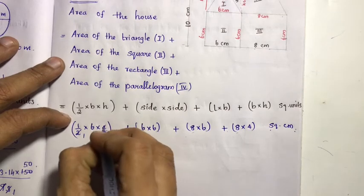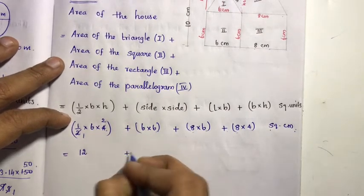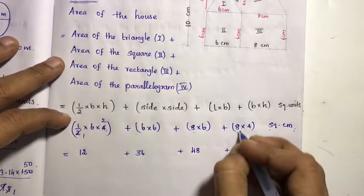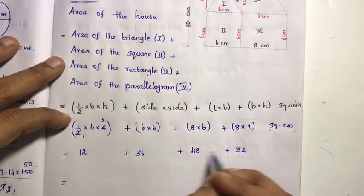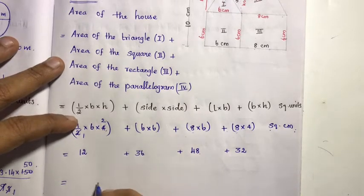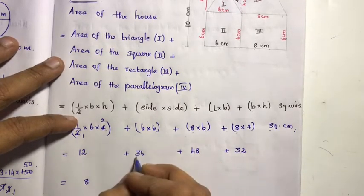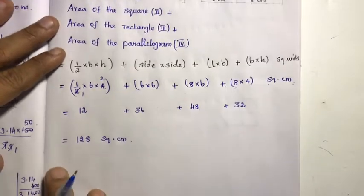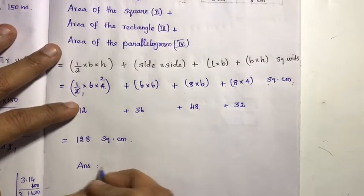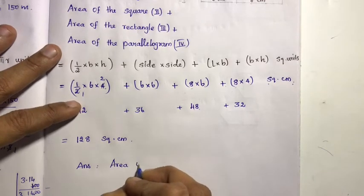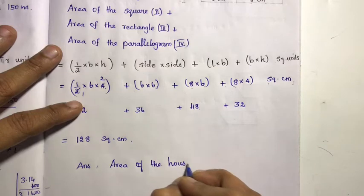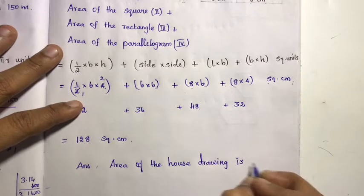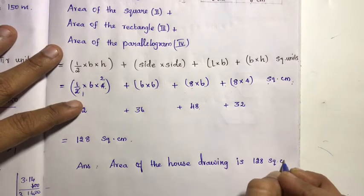Calculating: half of 6 into 4 equals 12. Plus 6 into 6 equals 36. Plus 8 into 6 equals 48. Plus 8 into 4 equals 32. Adding all: 12 plus 36 plus 48 plus 32 equals 128 square centimetres. The area of the house drawing is 128 square centimetres.